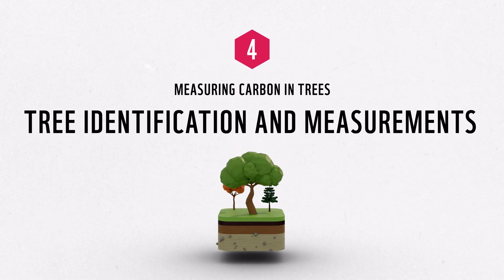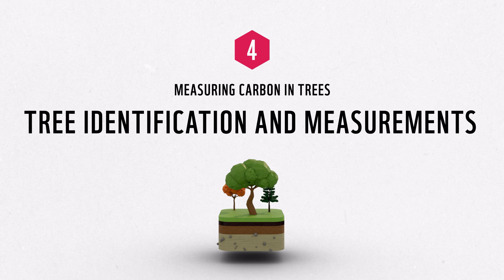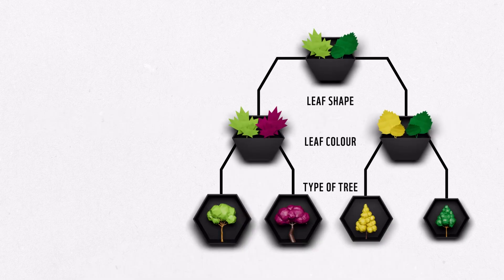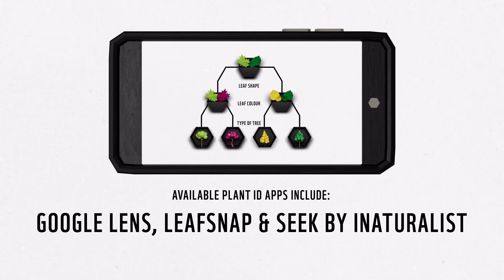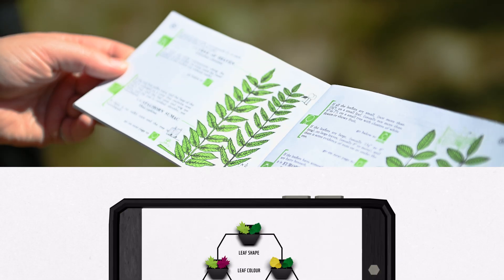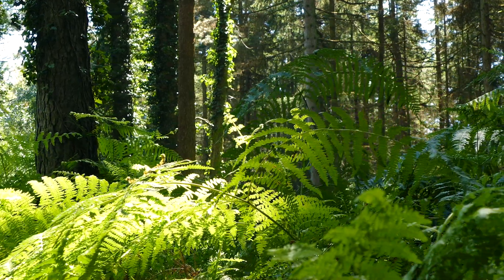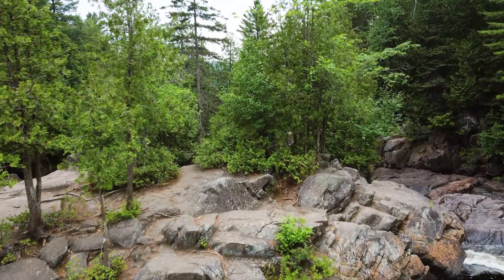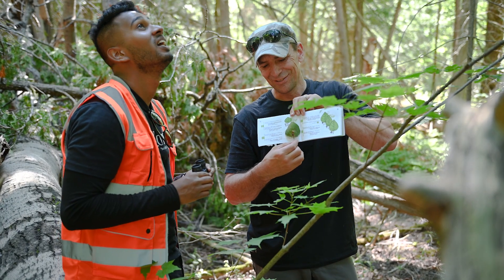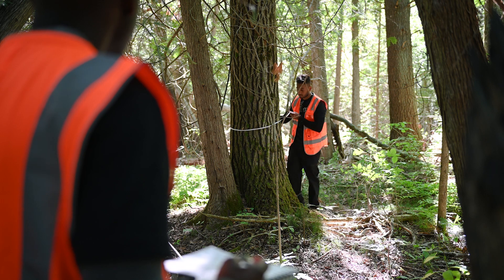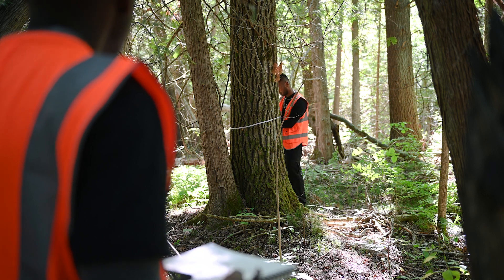Each study area supports unique tree communities made up of different species, which you will need to identify. Species identification can be done using a dichotomous key or with mobile applications made for this purpose, such as Google Lens, LeafSnap, and Seek by iNaturalist. It also helps to familiarize yourself with the local plant communities before doing surveys. There are lots of online resources to find this information specific to your area. Within the plot, systematically sample each tree larger than 2 meters in height.